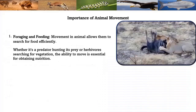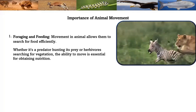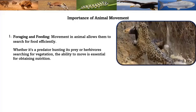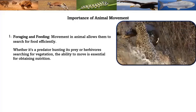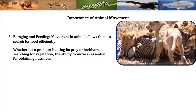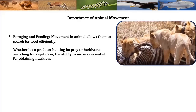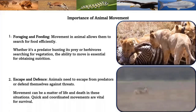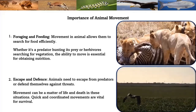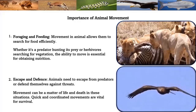Importance of animal movement. Foraging and feeding: movement allows animals to search for food efficiently, whether it's a predator hunting prey or herbivores searching for vegetation. This ability to move is essential for obtaining nutrition. Escape and defense: animals need to escape from predators or defend themselves against threats. Movement can be a matter of life and death in these situations.